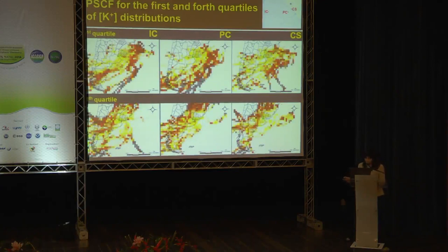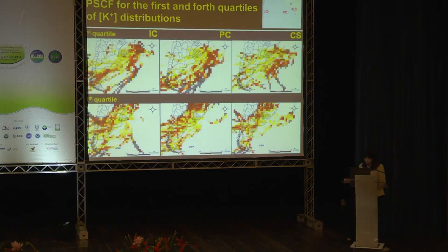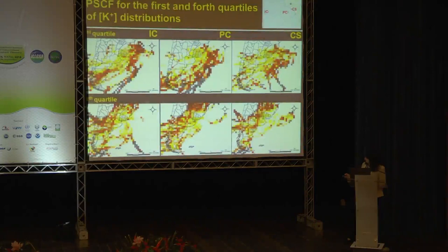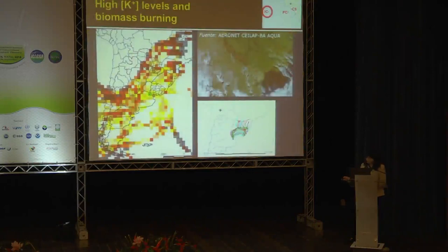The potassium ion has been identified as a chemical marker for biomass burning. This slide shows an example of a biomass burning episode which occurred during the sampling period; the 24-hour samples collected during this episode belong to those with potassium concentrations in the fourth quartile.